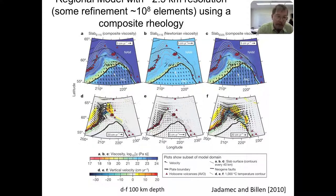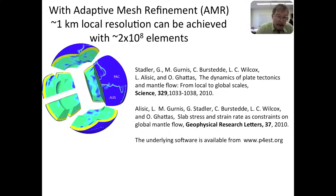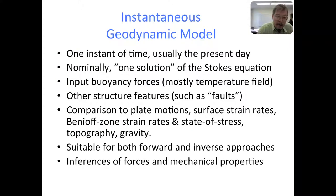We've now been able to achieve about 1 km local resolution in global flow models, emerging from work with computational scientists using refined versions of adaptive mesh refinement — we've actually gone down to 500 m in some models. The first models I want to discuss are what we call instantaneous geodynamic models — a force balance at one moment of time. The Stokes equation describing mantle flow has no time element, so we can set up an instantaneous force balance.